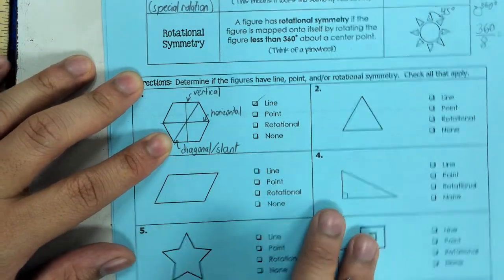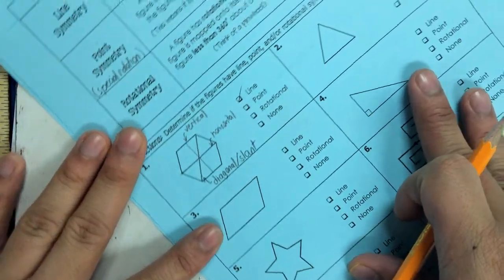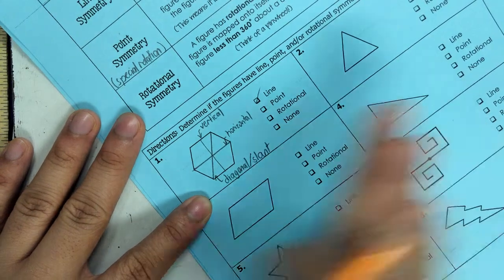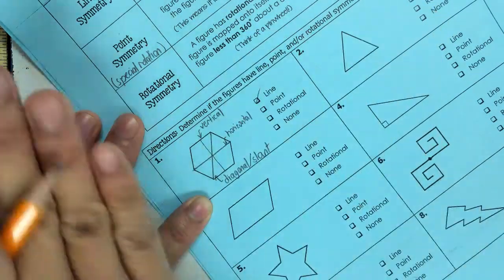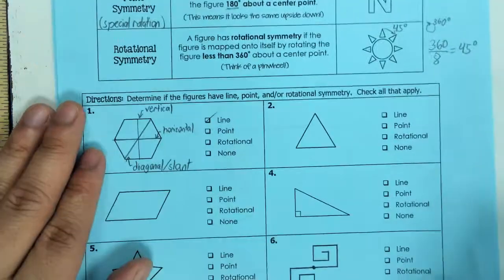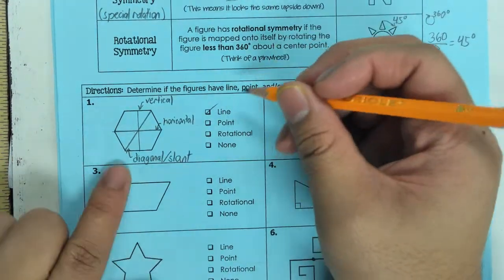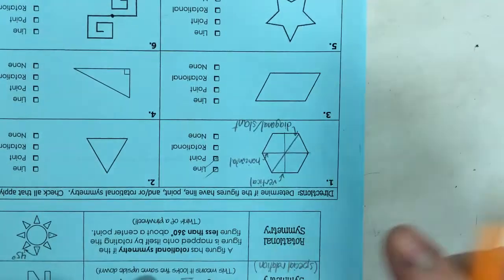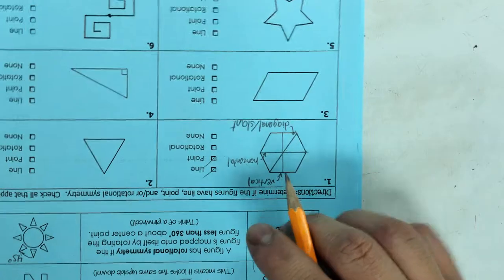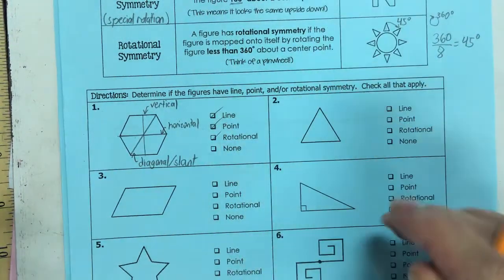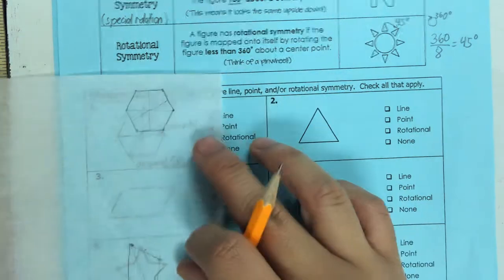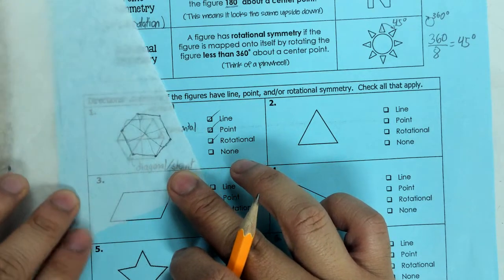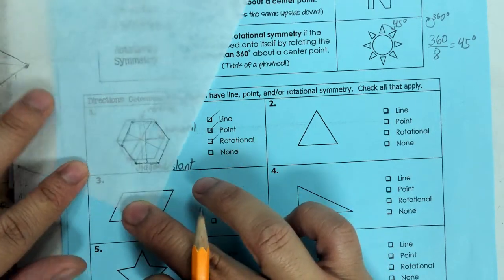This shape also has point symmetry. I can take this hexagon right here on my paper and turn it around 60 degrees because 360 divided by 6 gets me 60 degrees.